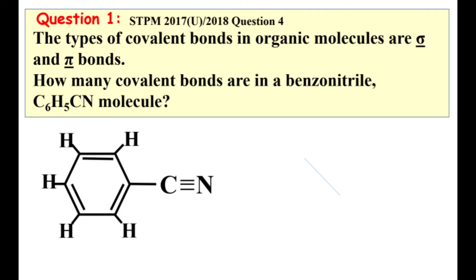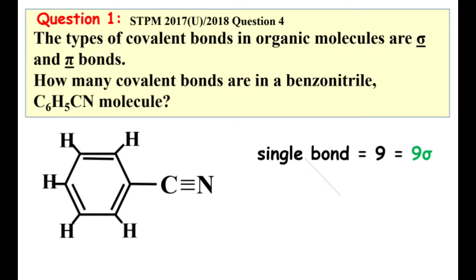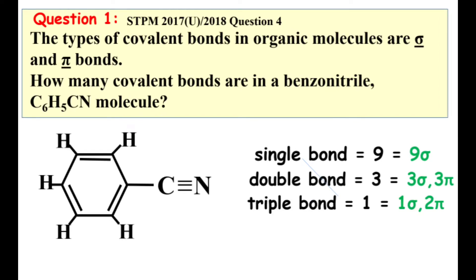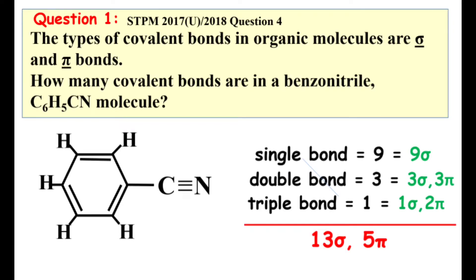Let's go back to question one. First, we draw the Lewis structure of benzonitrile. From the structure, there are nine single bonds, so it will be nine sigma bonds. There are three double bonds, giving three sigma bonds and three pi bonds. There is also one triple bond, which is made up of one sigma bond and two pi bonds. Therefore, there are a total of 13 sigma bonds and five pi bonds in the molecule.